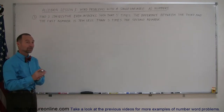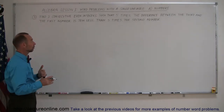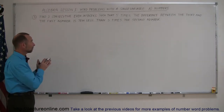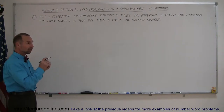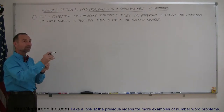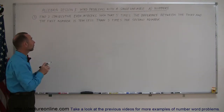To help ourselves through that one, we're going to define the three numbers. They're consecutive even integers, which means each number is two more than the previous number.